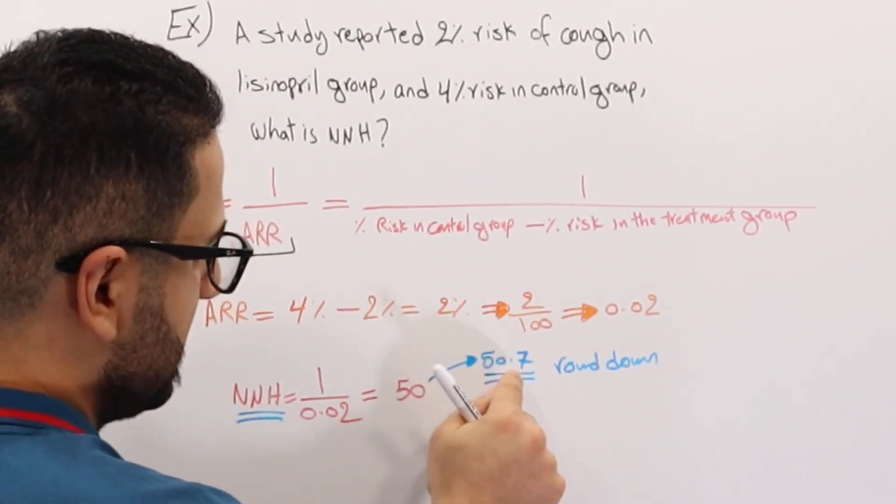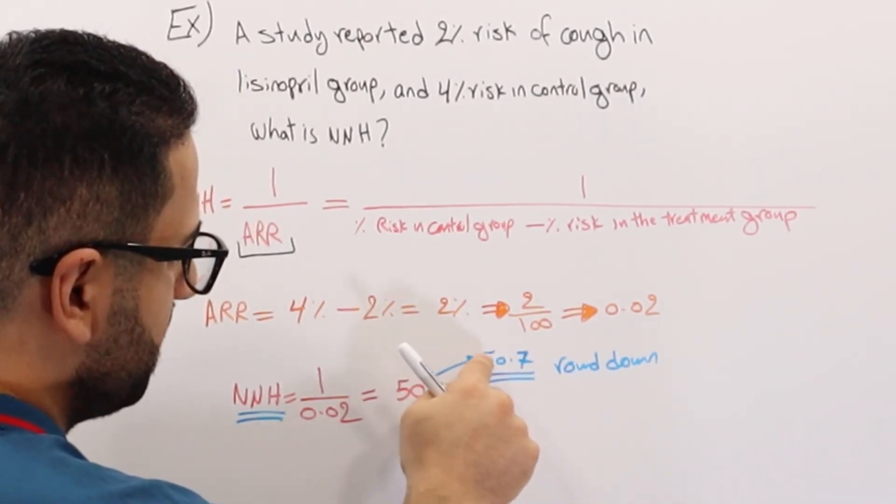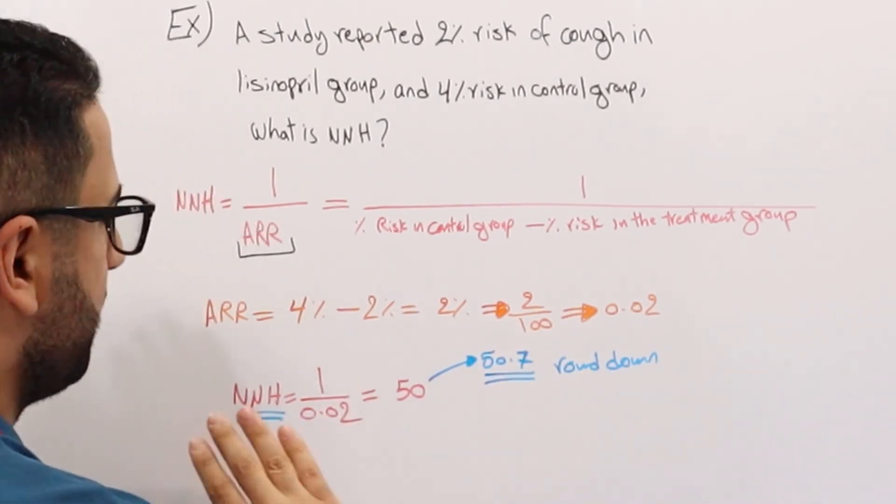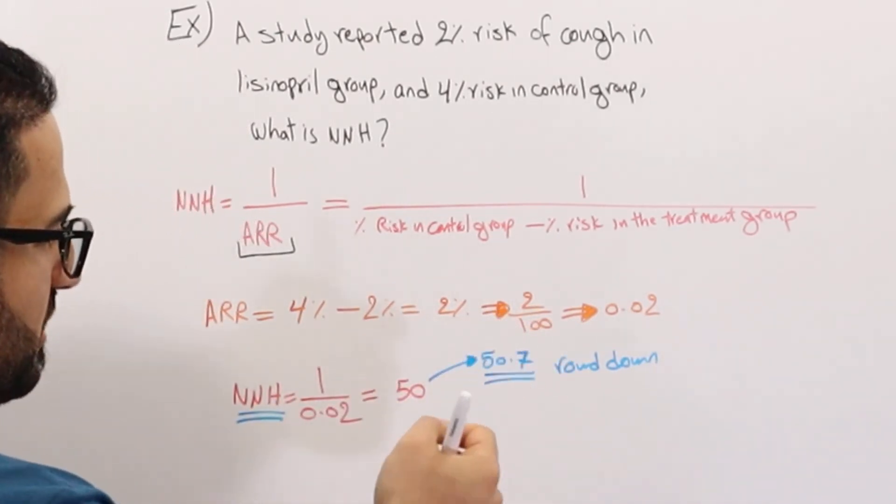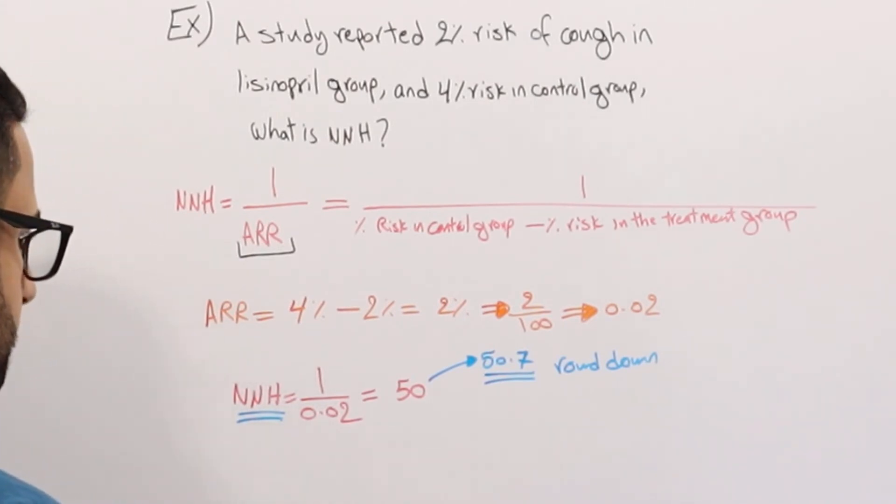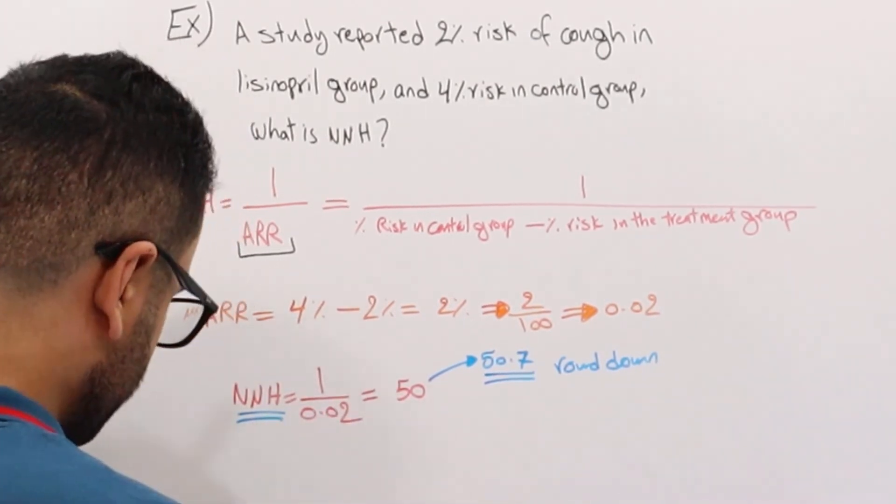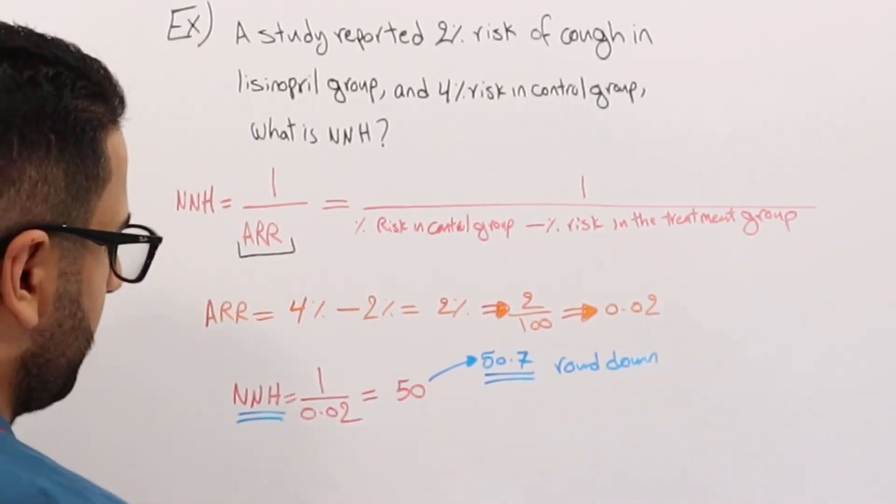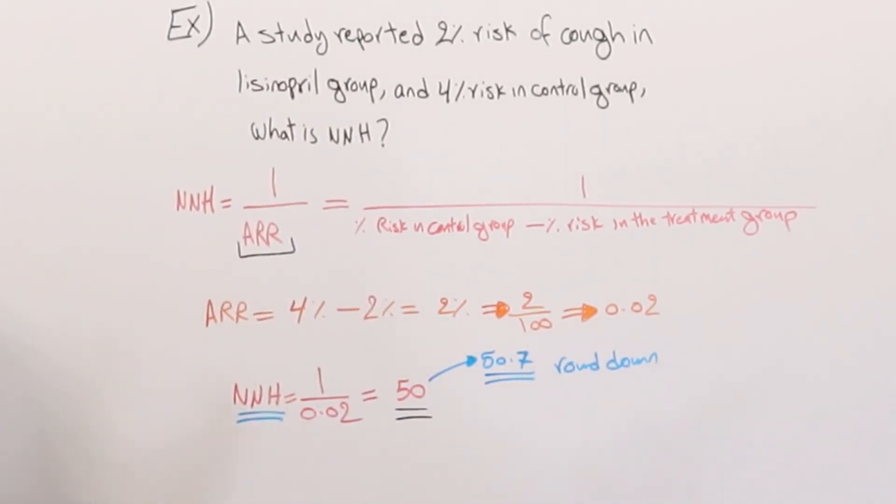Any decimal place after the whole number 50 is going to round down, regardless if it's closer to 51 or far from 51. In this case, it's 50, so we don't need to do anything. So what does this mean, 50?